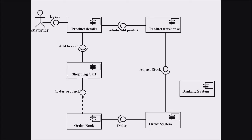Next we move to the system known as the banking system. This system is in interface with the online shopping system, and these two independent systems are in contact. There is a payment portal, and these two systems have independent ports through which we connect an interface. This is how we represent a component diagram for an online shopping web portal.